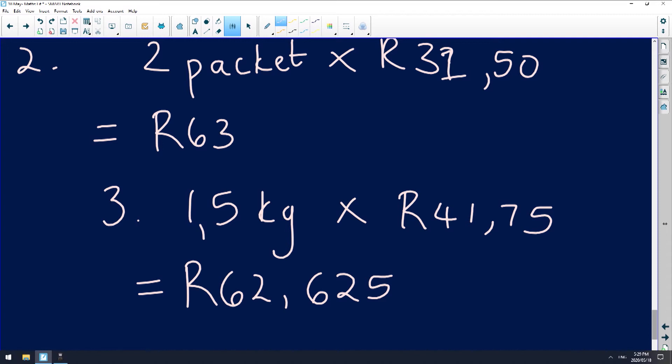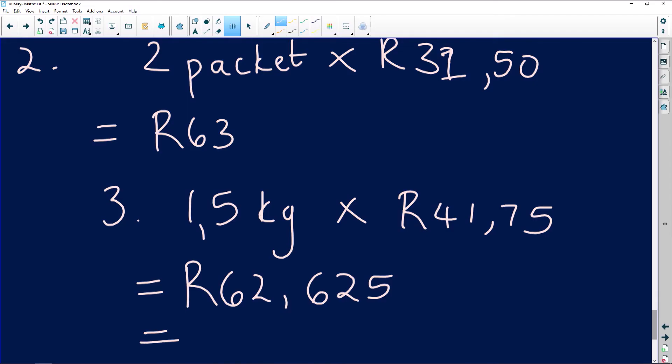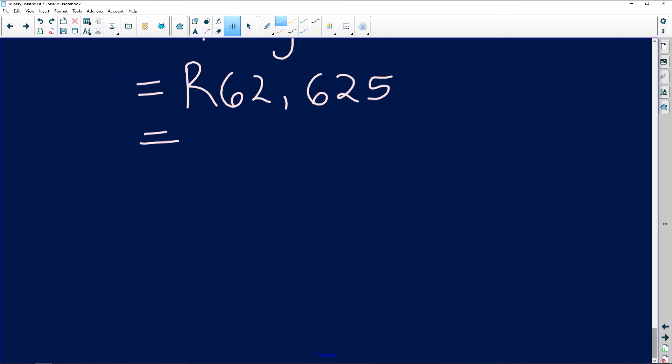I know that money needs to be two decimal places - money cannot be three decimal places. So going down there, it's going to be this two affected by that five: R62.63. So that's how much you are going to need for the beef.